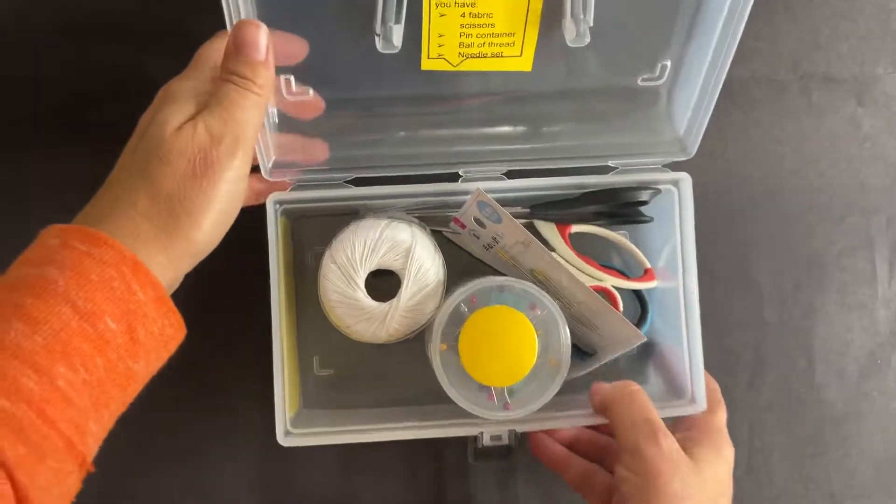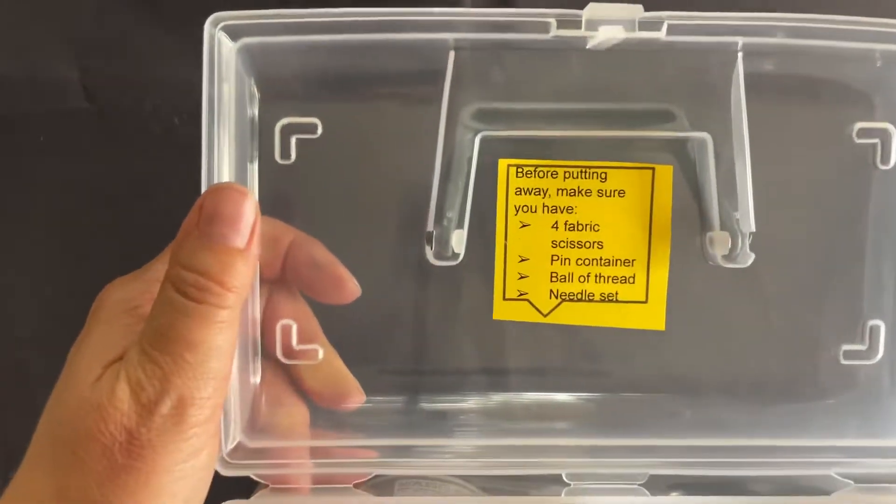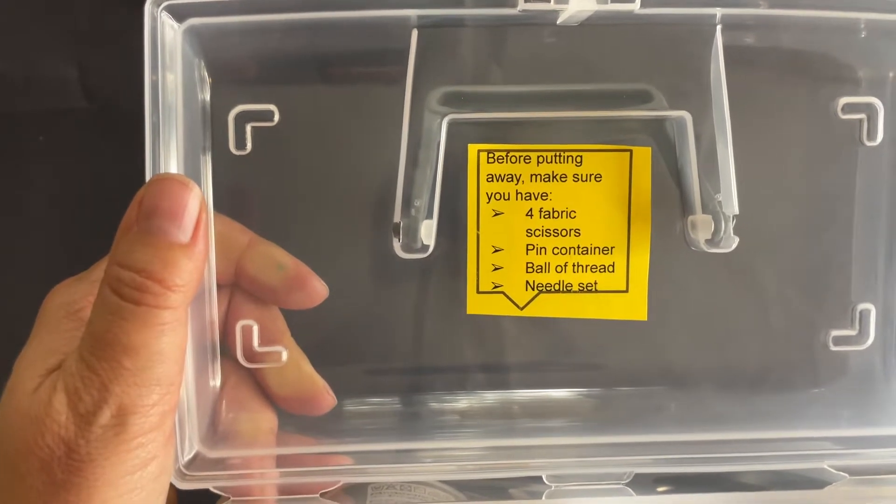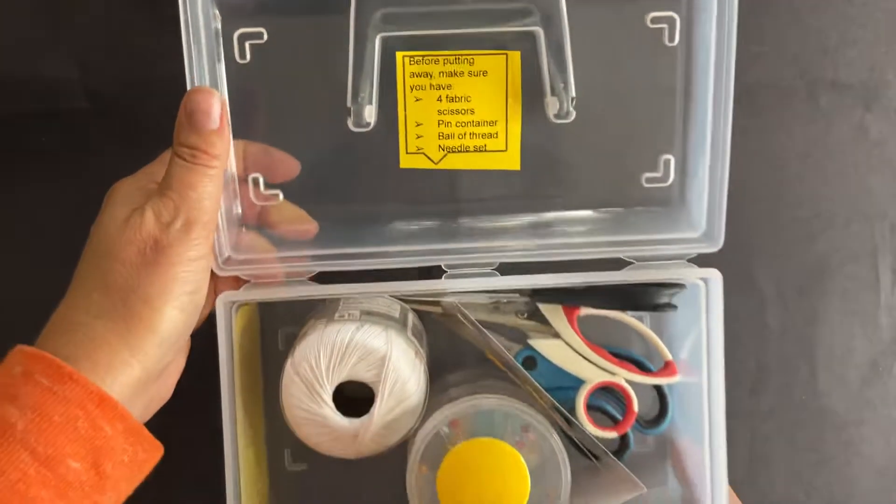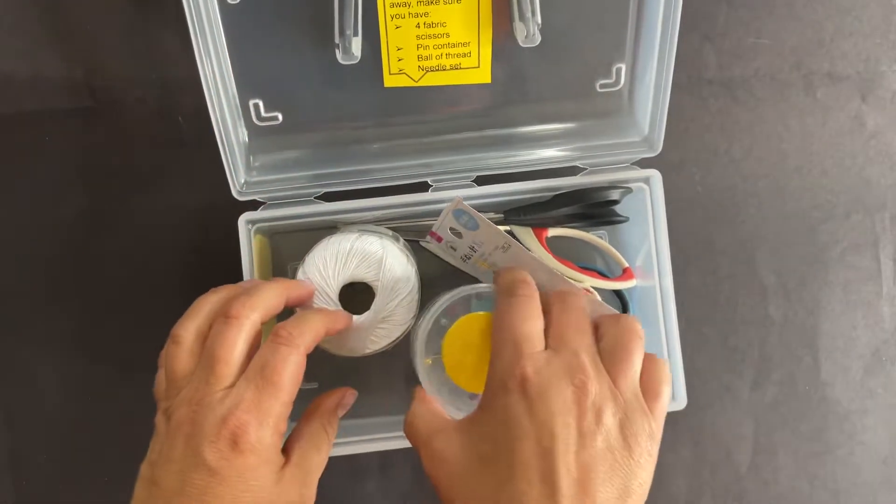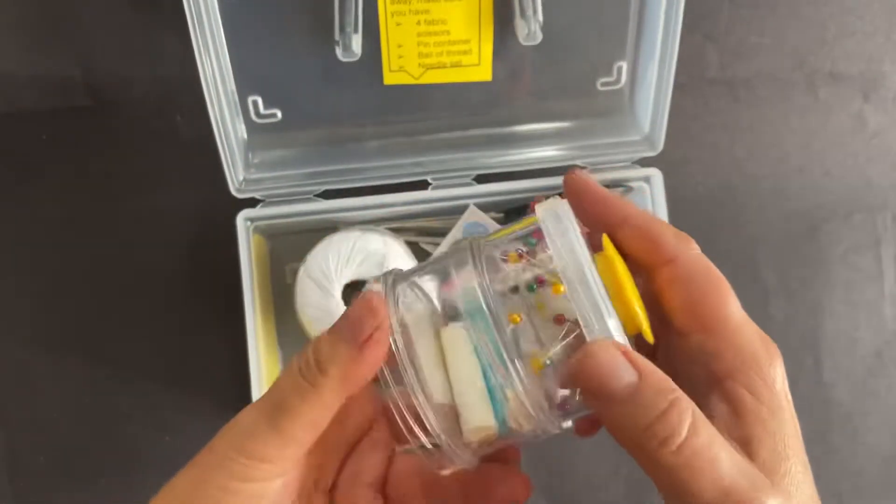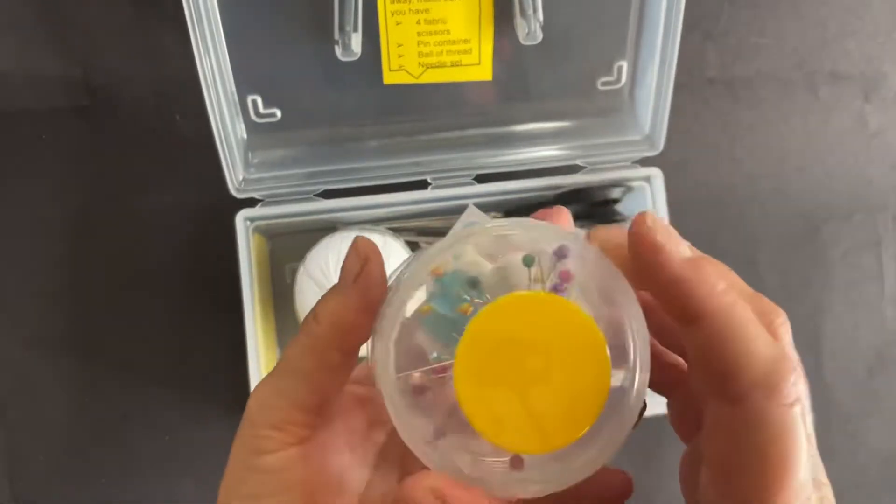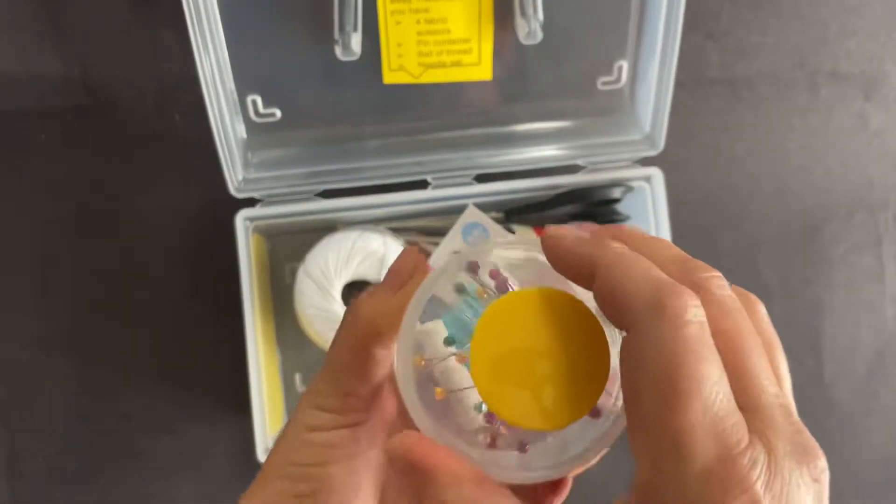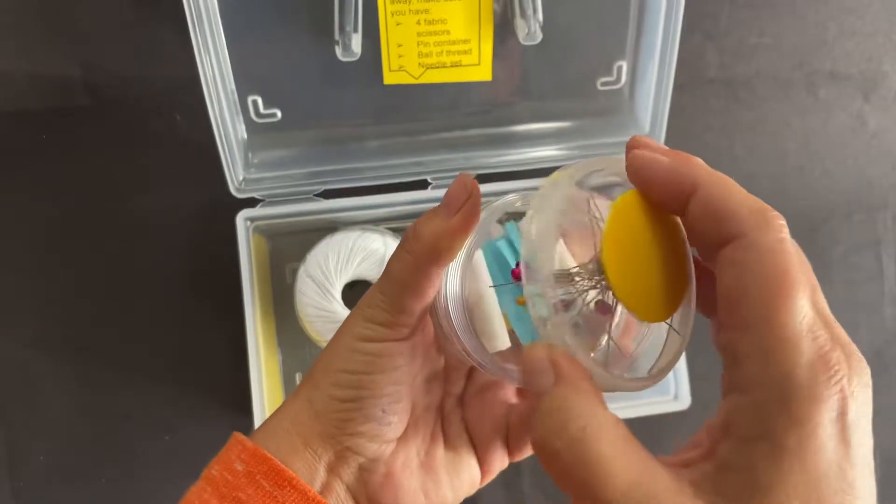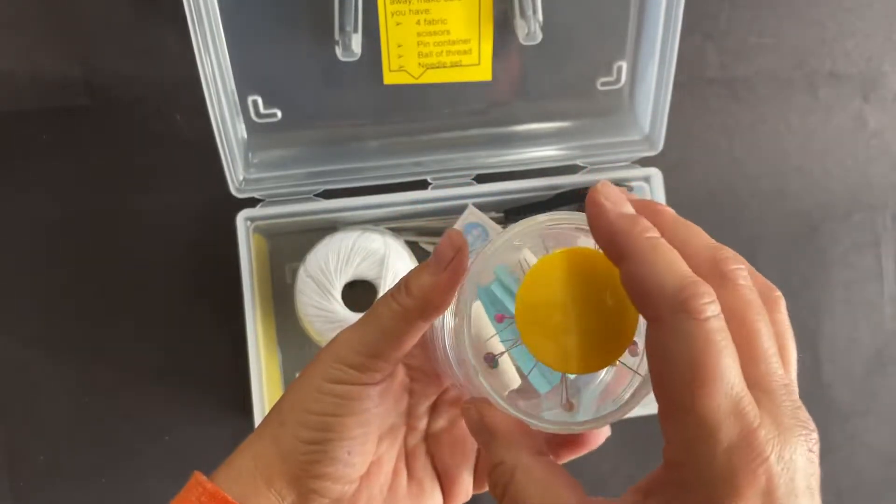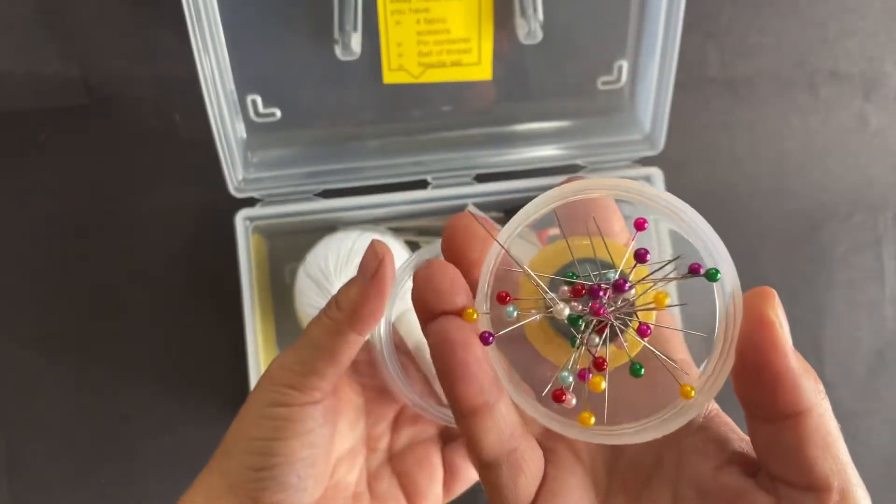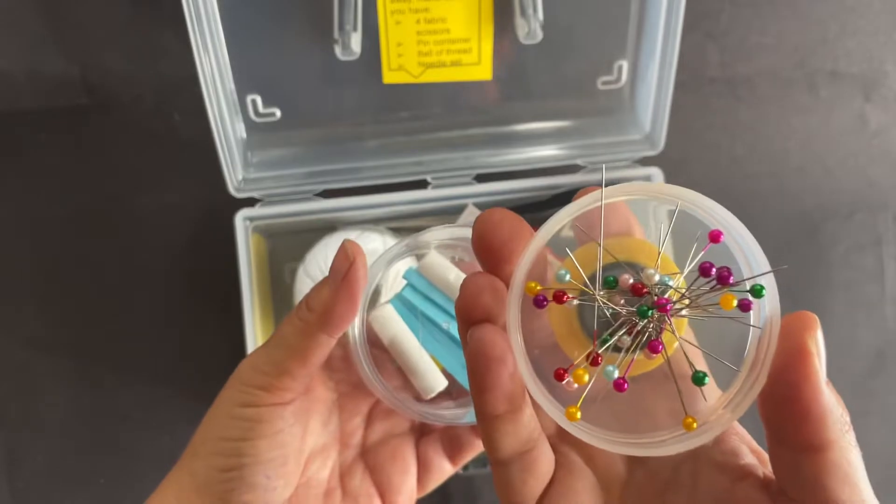When you open it up, there is a supply list so students can double-check that they have everything before they put the box away. In the box you have a custom pin container which also has a number on the bottom. Originally the pin container was just the container, but I glued this magnet on the top so the students could easily collect the pins. This was an alternative to the magnet wand.